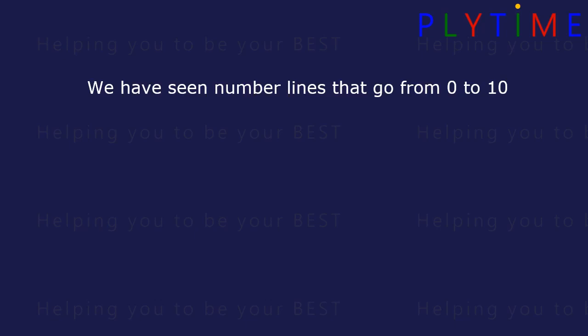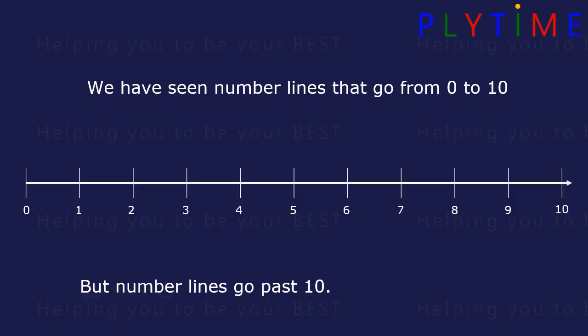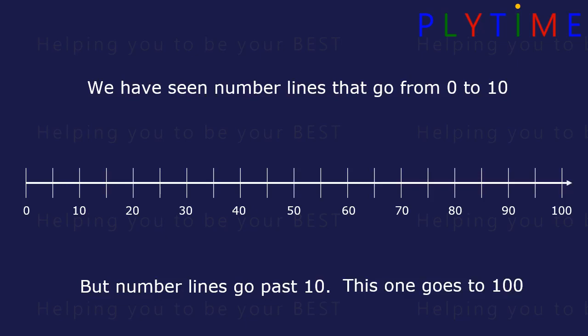We've seen number lines that go from 0 to 10, but number lines can go past 10. This number line goes to 100, and number lines can continue forever.